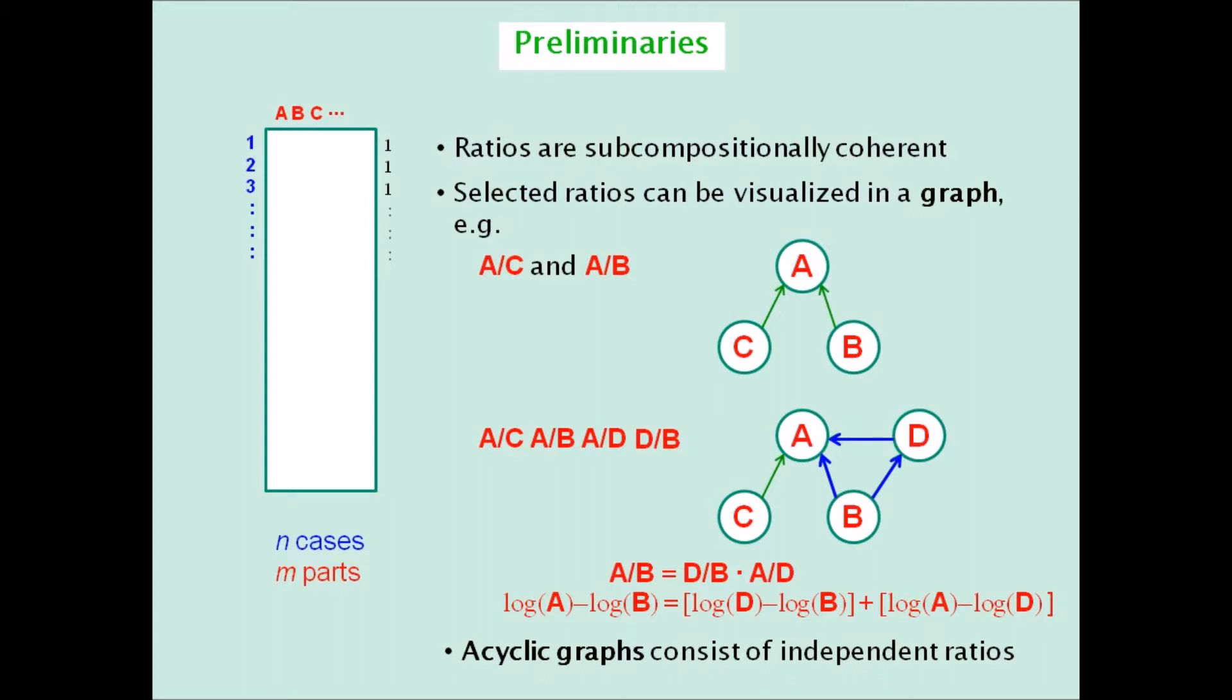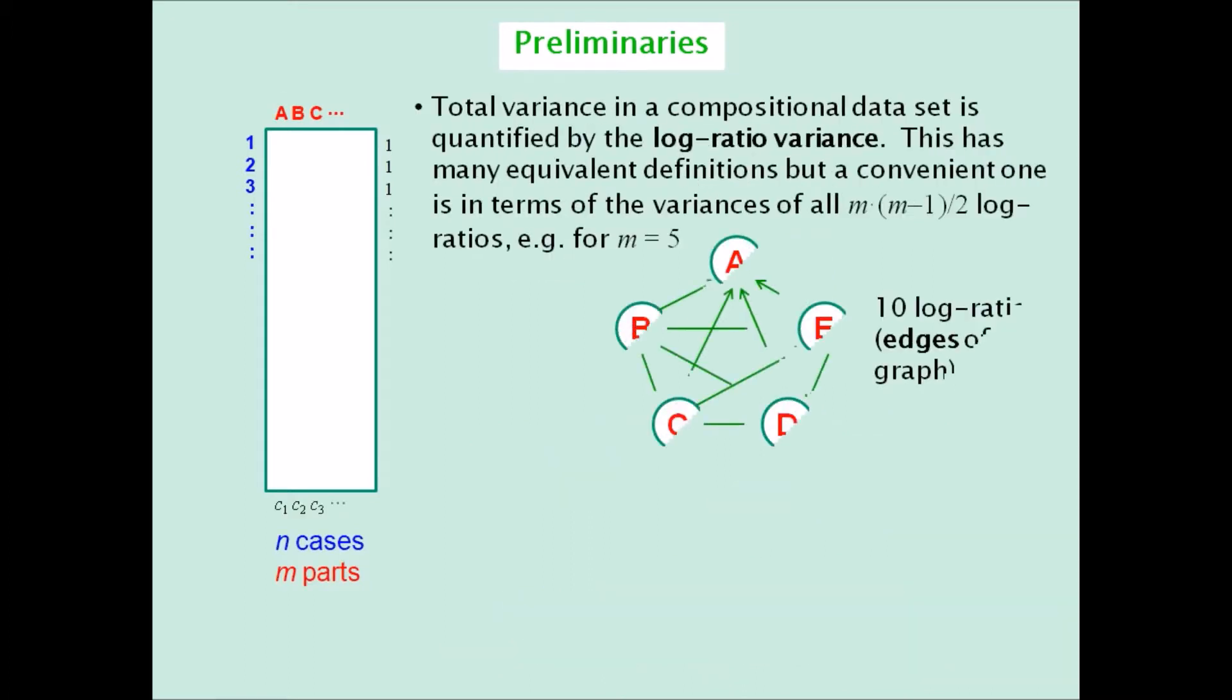To measure the total variance in a compositional data set, the log ratio variance is used. This quantity has many equivalent definitions. One is in terms of the variances over all pairwise log ratios. For example, the logarithms of all 10 ratios defining all the edges between the parts of this five-part composition.